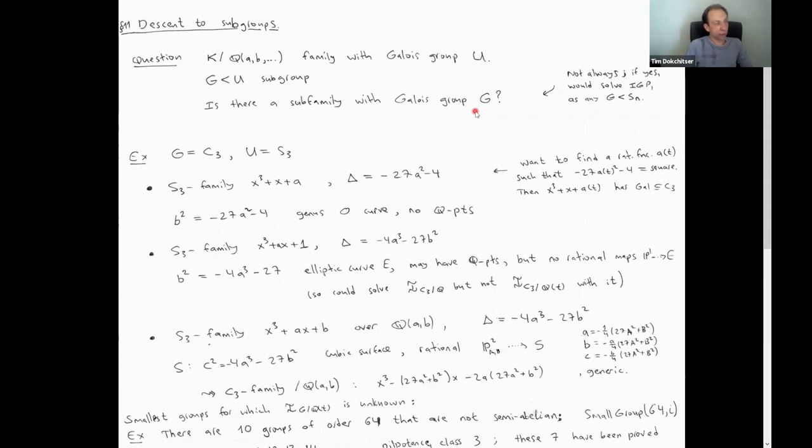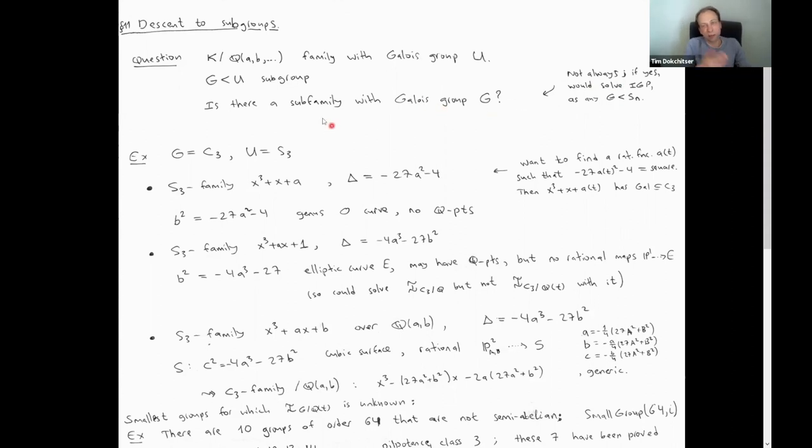You can ask: when is this descent possible? If it were always possible you could solve the inverse Galois problem, since every group is a subgroup of S_n and we know how to construct S_n families — if we could always descend to a subgroup we could construct any G. We don't expect this for an arbitrary family, and certainly it is not always true. Let's look at an example: constructing C3 families starting from an S3 family.